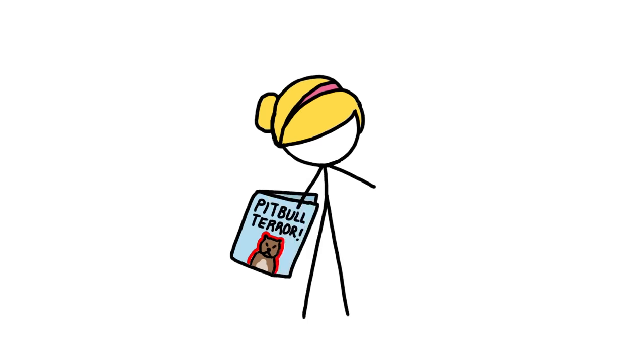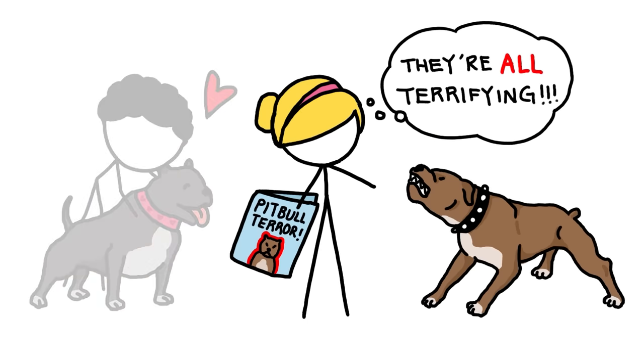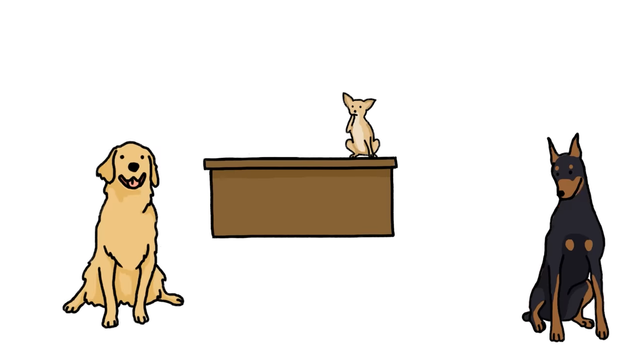So have dog enthusiasts somehow been imagining all of these differences among breed groups? Maybe. Psychology research suggests that once we begin to see something in a particular way, we naturally seek out evidence that strengthens that image and ignore evidence that undermines it. But the truth is that you can't judge a bark by its cover.